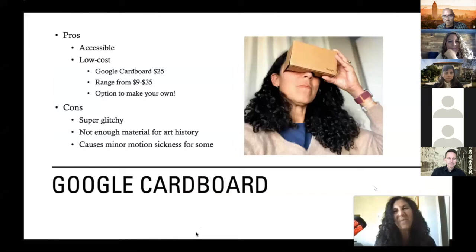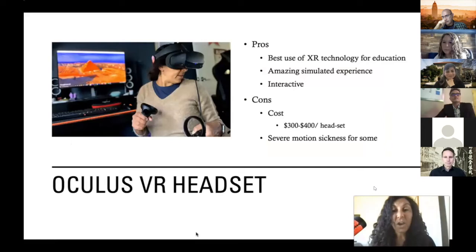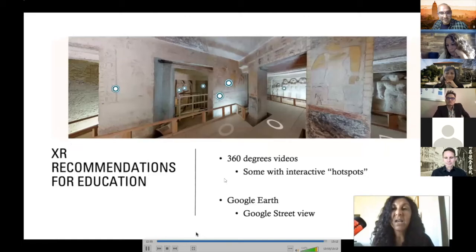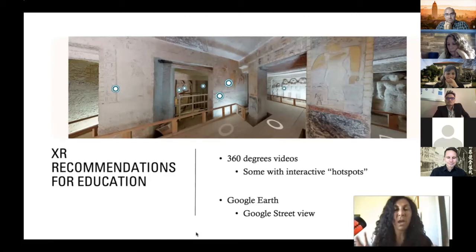In conclusion: Google Cardboard — I played around with that, and although it's very accessible and low cost, it's so glitchy I could never really get it to work, and it would be a nightmare with 200 students. It also causes minor motion sickness. The Oculus VR headset is absolutely amazing — the best use of XR technology for education, an amazing simulated experience — but it's ridiculously expensive and also makes you feel really sick. In the end, my recommendations for education, particularly for art history, are to either utilize 360-degree videos or just stick to good old-fashioned Google Earth and Google Street View. Thank you.